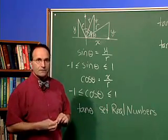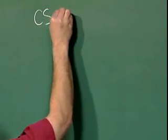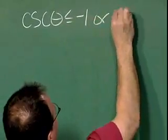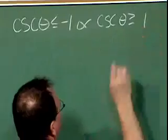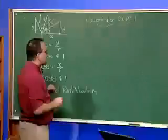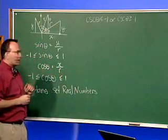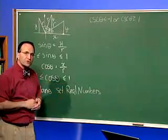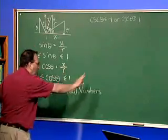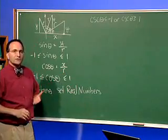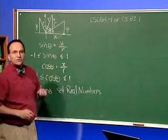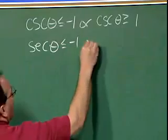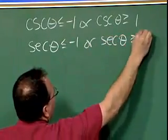Cosecant theta is less than or equal to negative one or greater than or equal to positive one. Now, by the same reasoning, let's look at secant theta, which is the reciprocal of cosine. Cosine needs to be between negative one and positive one inclusive, so the reciprocal has to be outside of that range. In other words, secant theta has the same range as cosecant theta. So secant theta is less than or equal to negative one or greater than or equal to positive one.